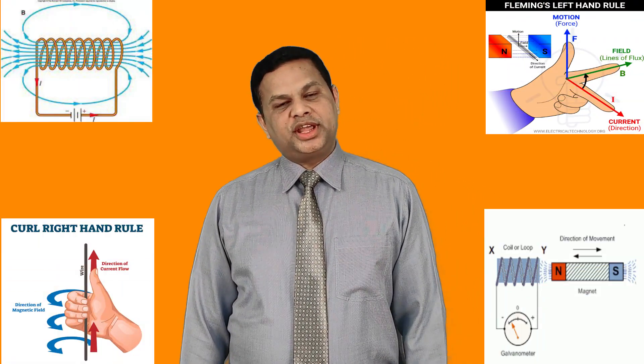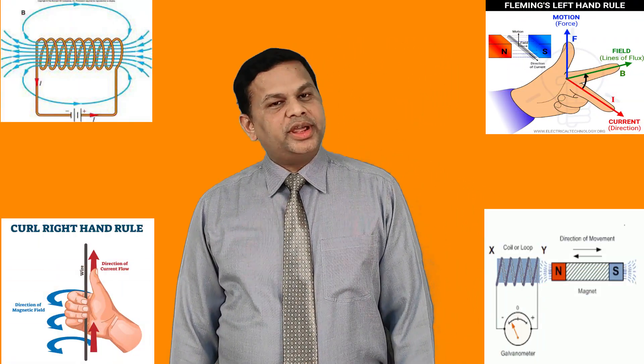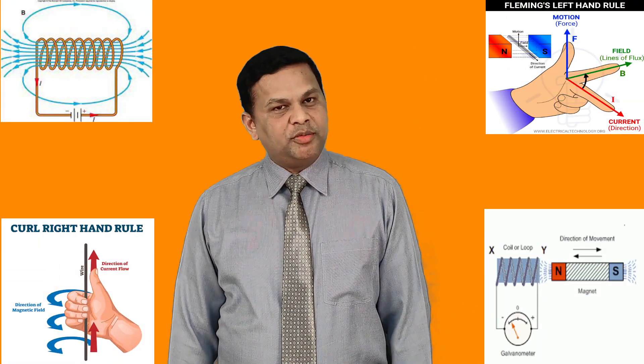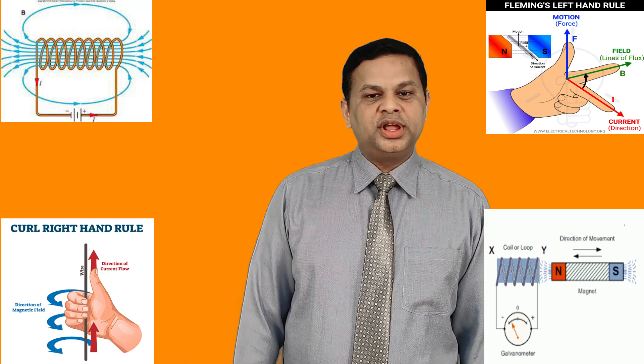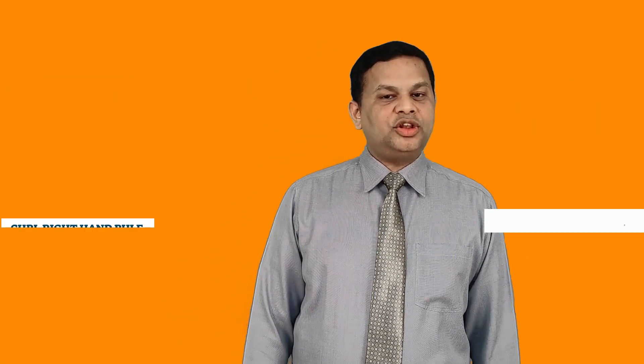In magnetism, take care for the solenoid, right-hand thumb rule, Fleming's left-hand rule, and Lenz's law. And in the household circuit, take care for topics like earthing, main circuit, and fuses. These are very important topics.